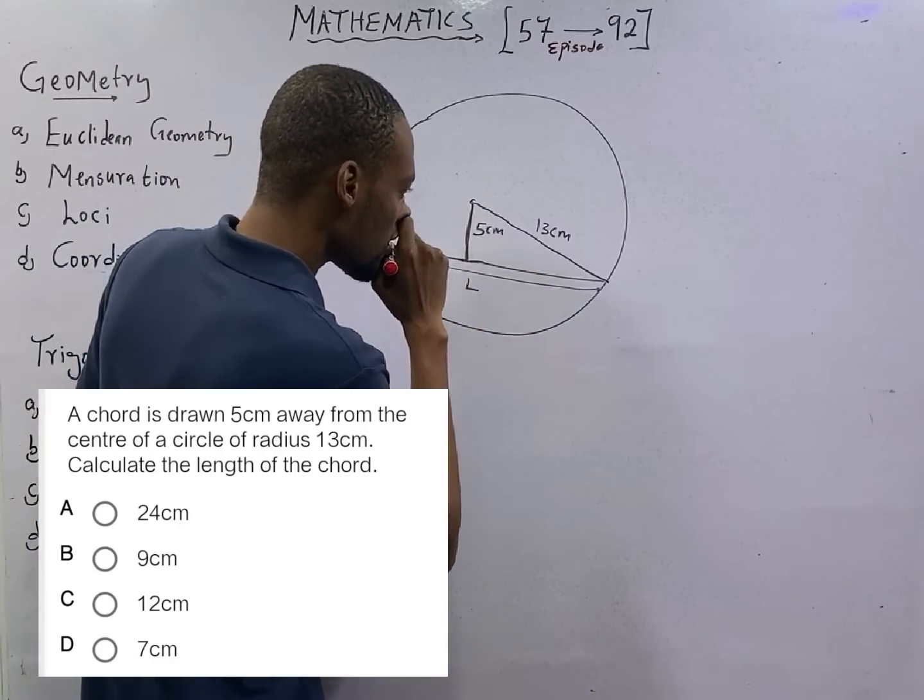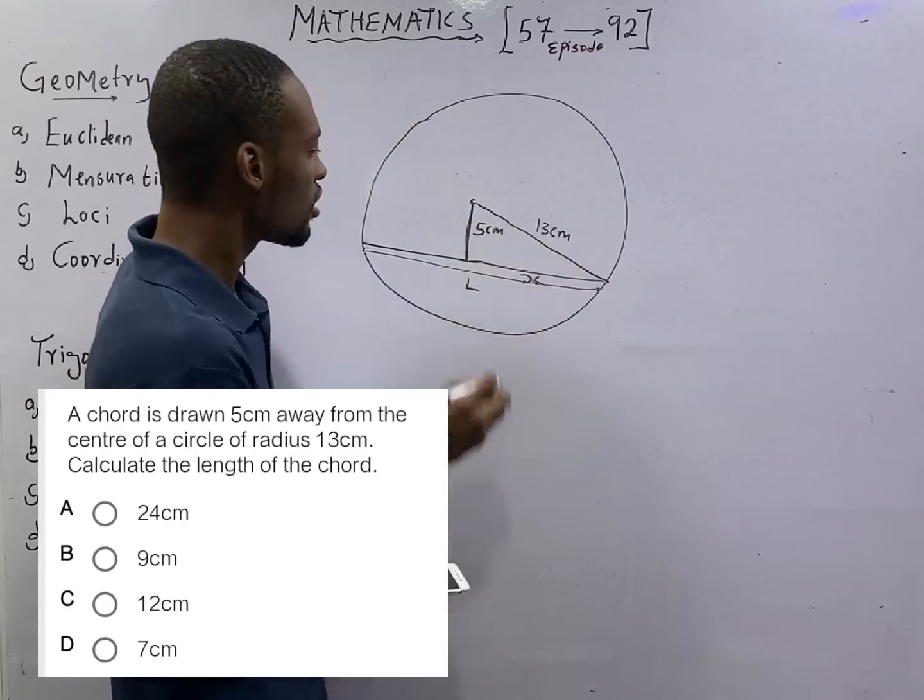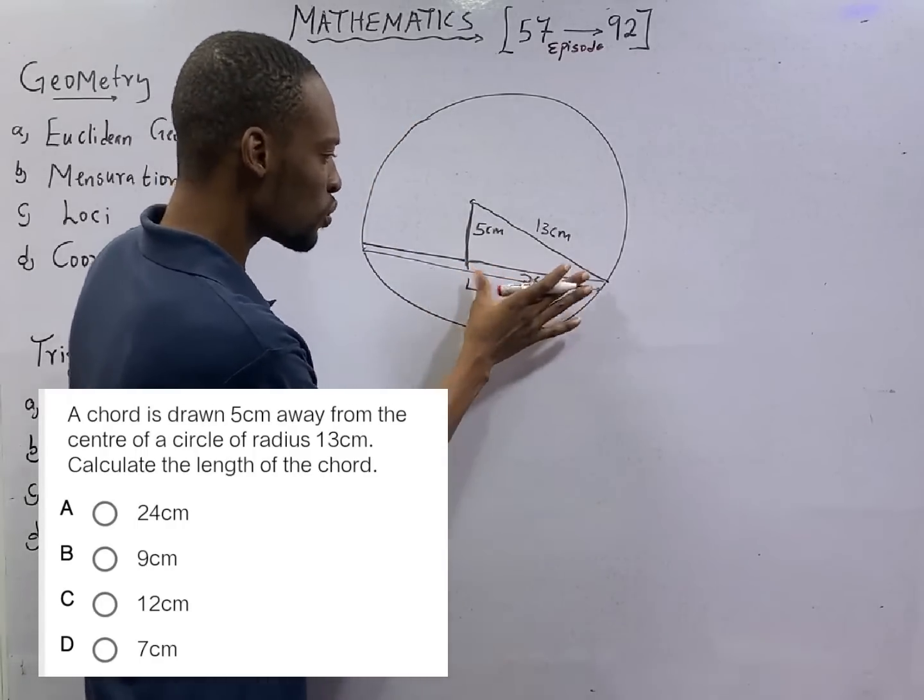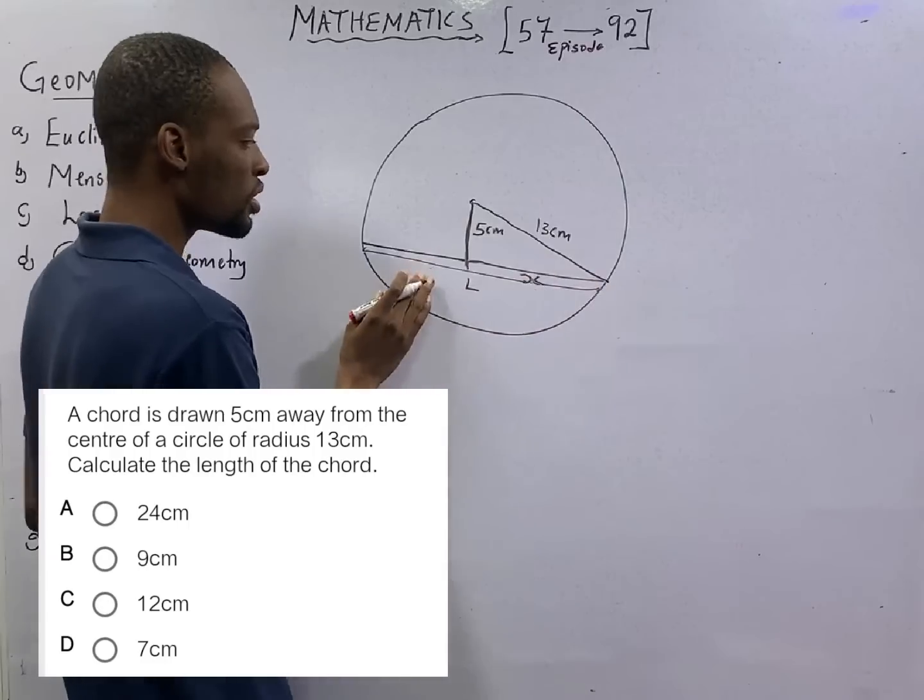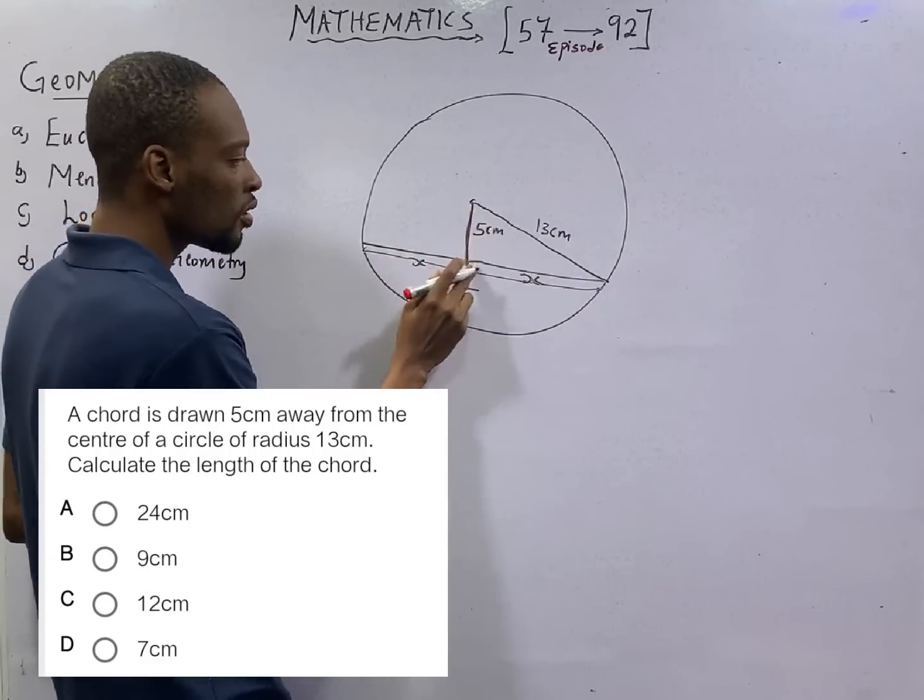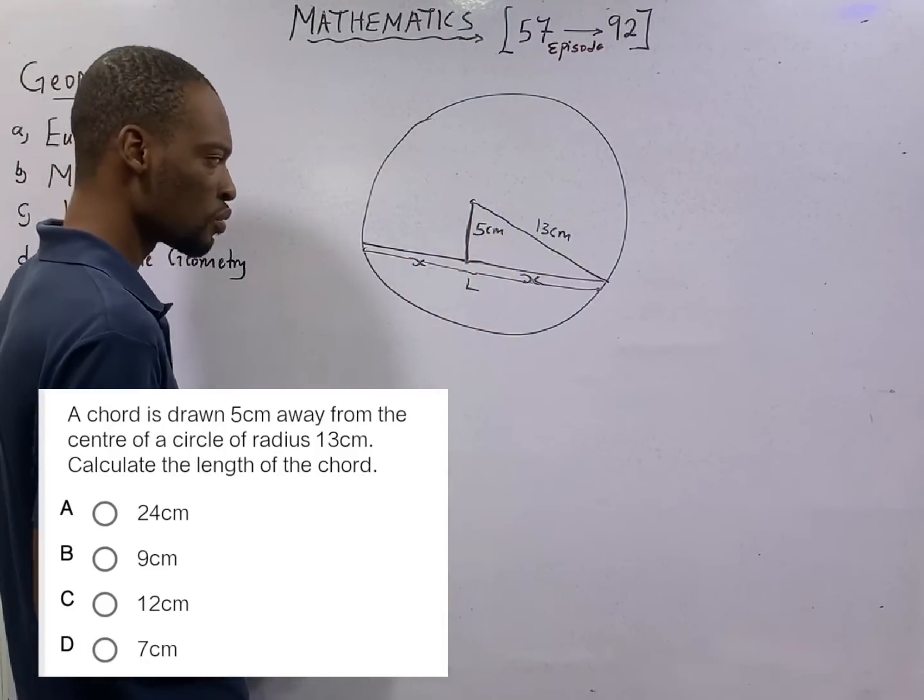Let's call it S. If we know this length S and multiply it by 2, that will be the full chord length from here to here. Because if here is S, here will also be S. This is half of the length. So this approach should make sense.